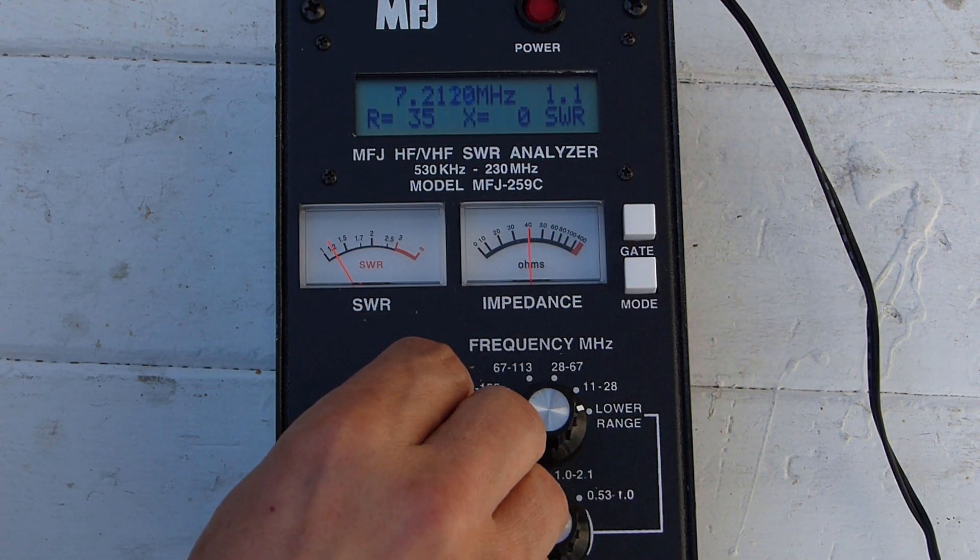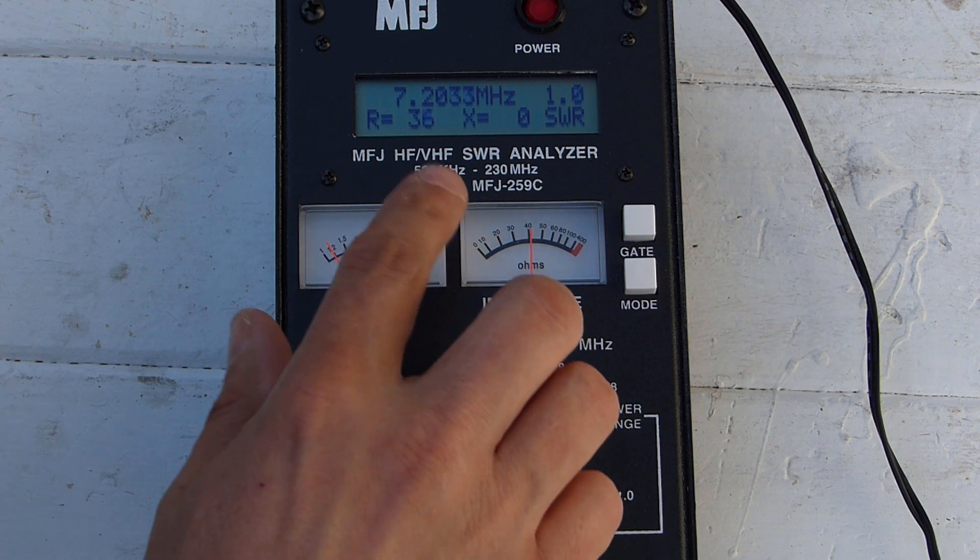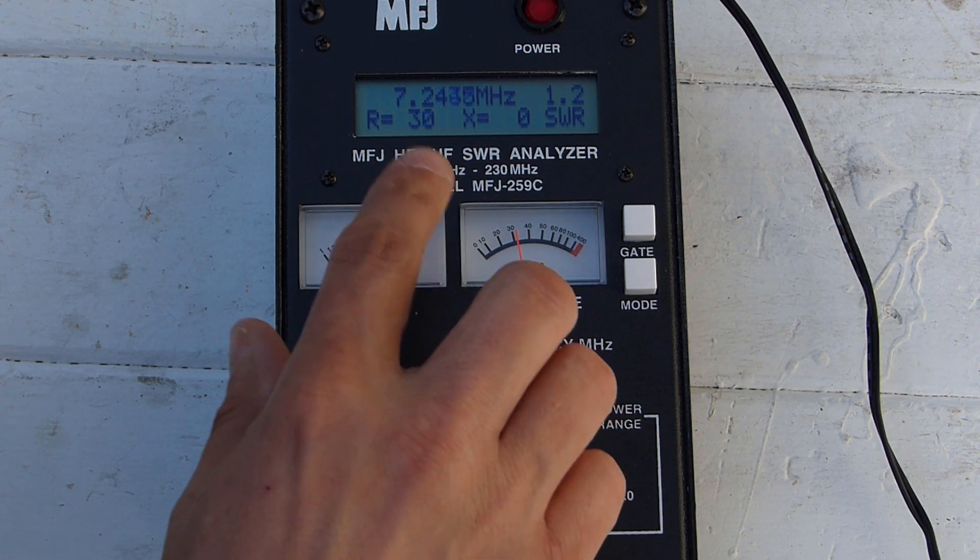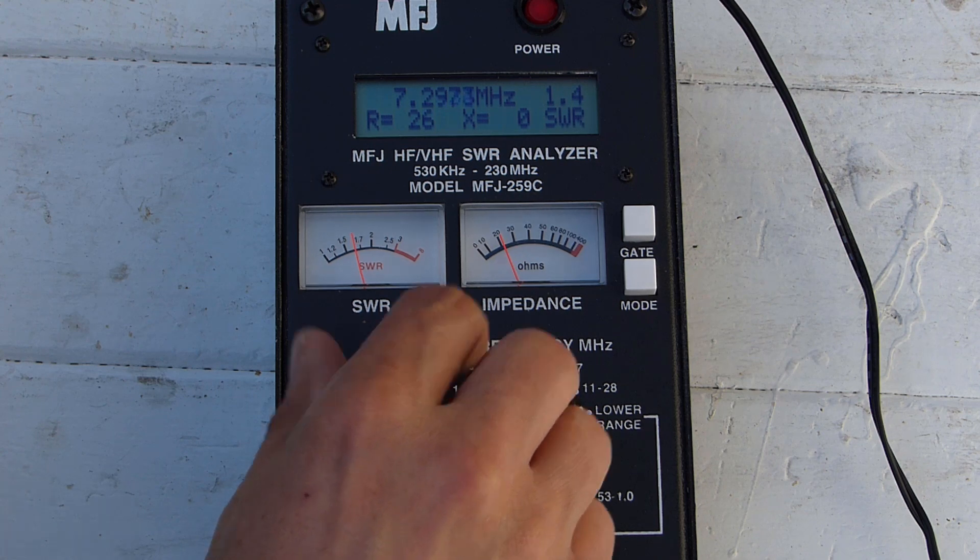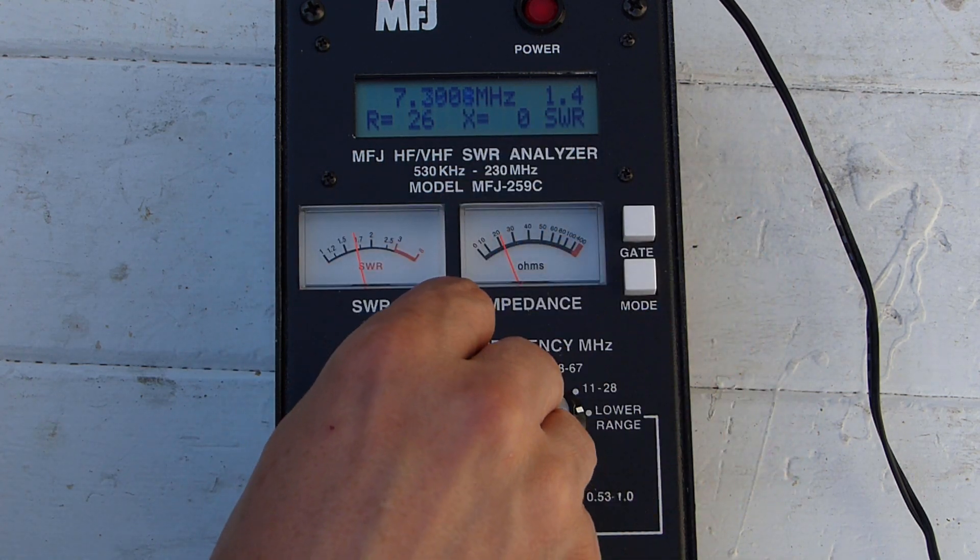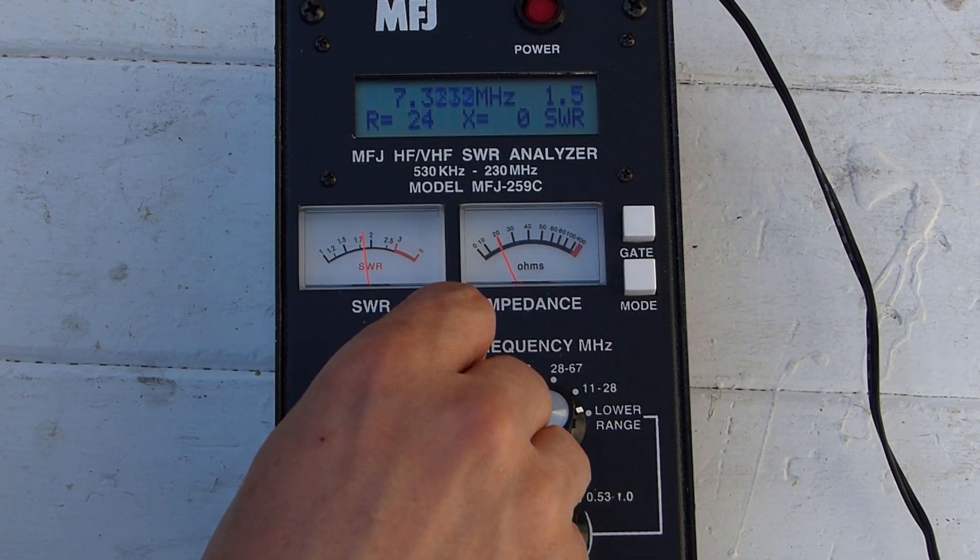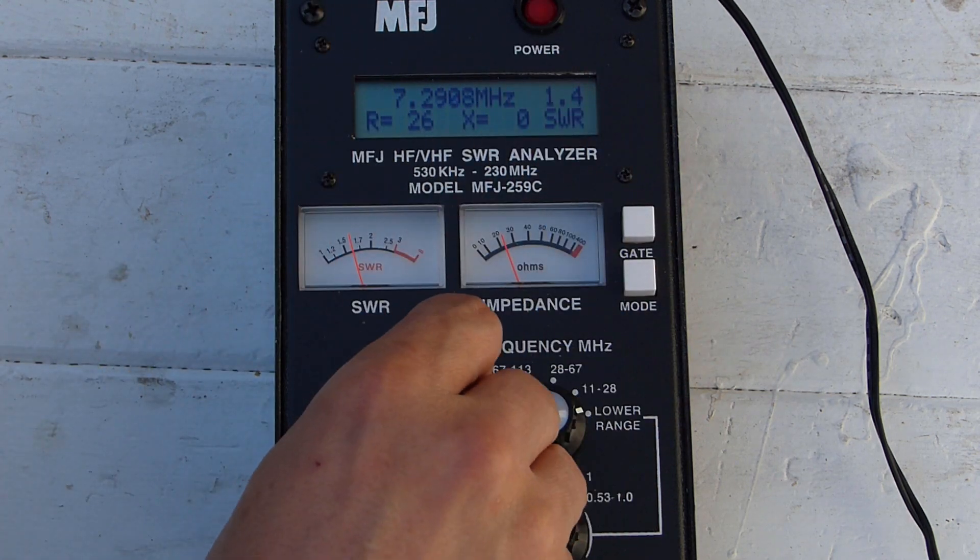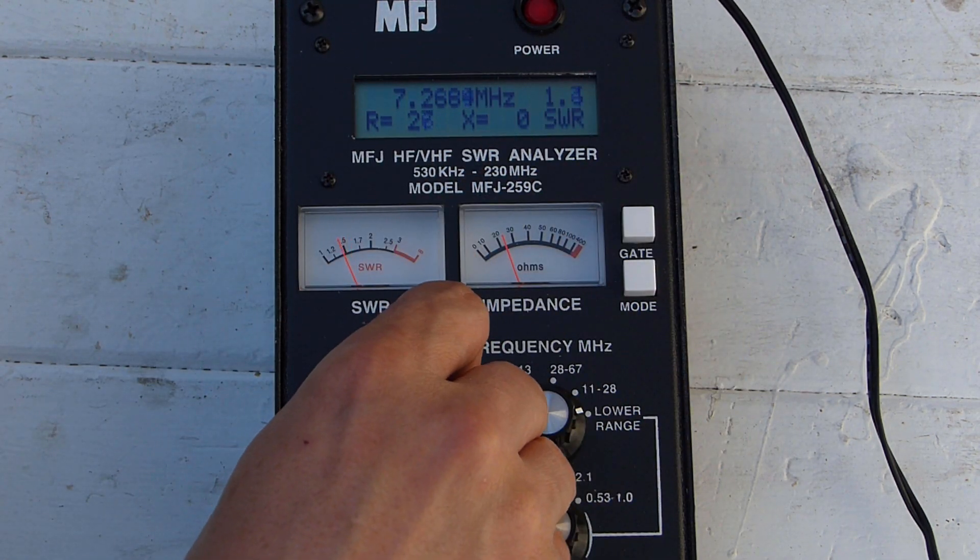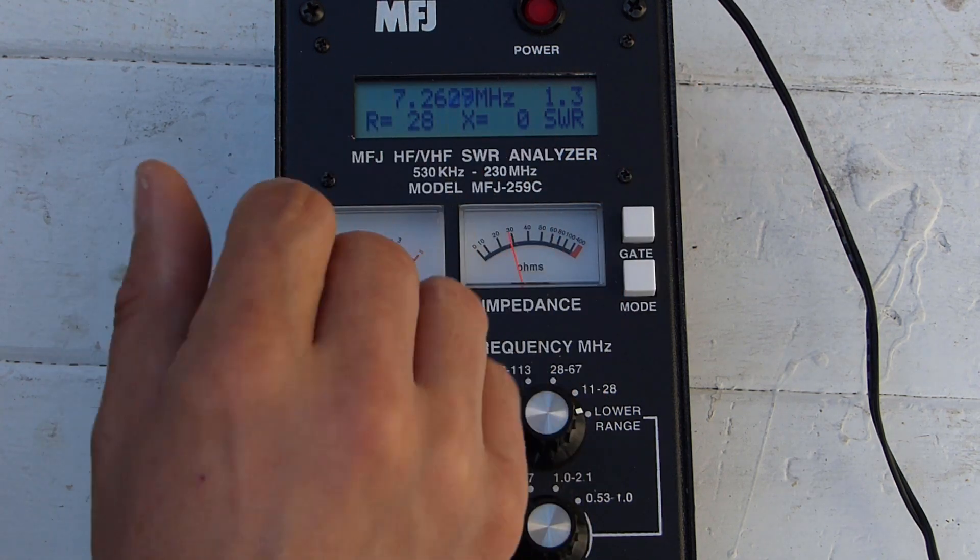Okay, so if I switch over to 40, you can see things are looking pretty good here. It's more or less centered in the band. But when I get up near the edges, you can see that the SWR kind of starts to go up and the resistance drops a bit here. So when I'm running 40, I'm probably going to want to stay closer to the center of the band with this antenna. But that's okay.